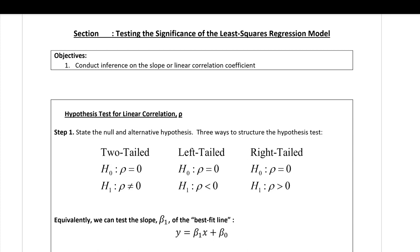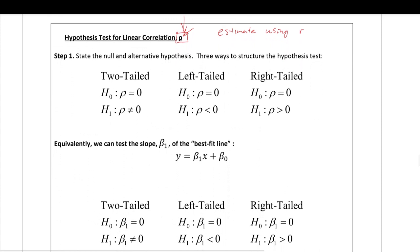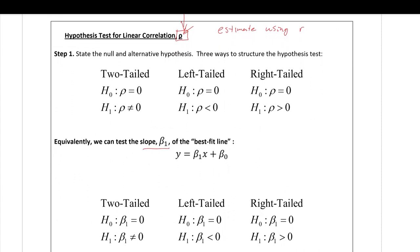In this section, we're going to be talking about testing the significance of the least squares regression model. Recall that we had a correlation coefficient called rho — the population linear correlation coefficient — which we estimate using r. There are essentially two types of claims that can be made regarding two variables being correlated: one done on the correlation coefficient, and one done on the slope of the regression model.